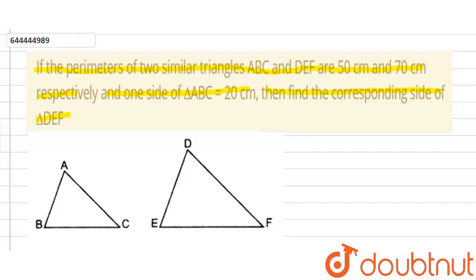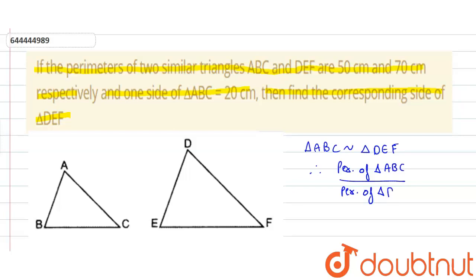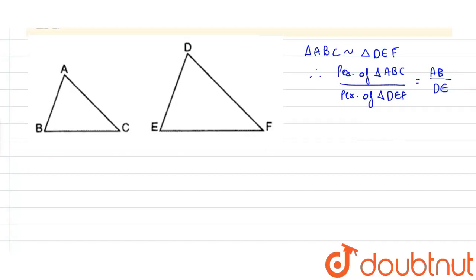In this question we have given triangle ABC is similar to triangle DEF. Therefore, the perimeter of triangle ABC upon perimeter of triangle DEF is equal to AB upon DE.